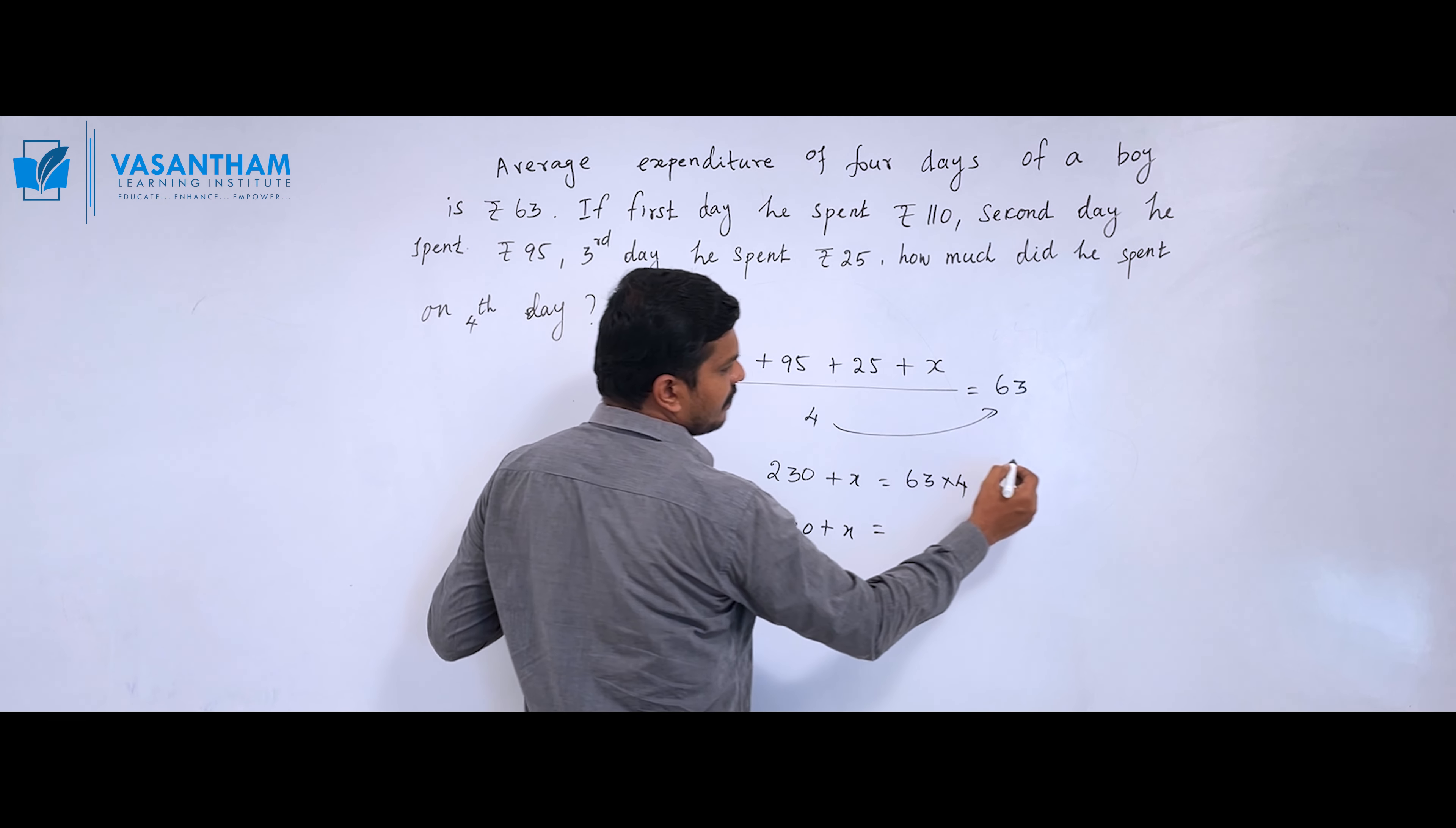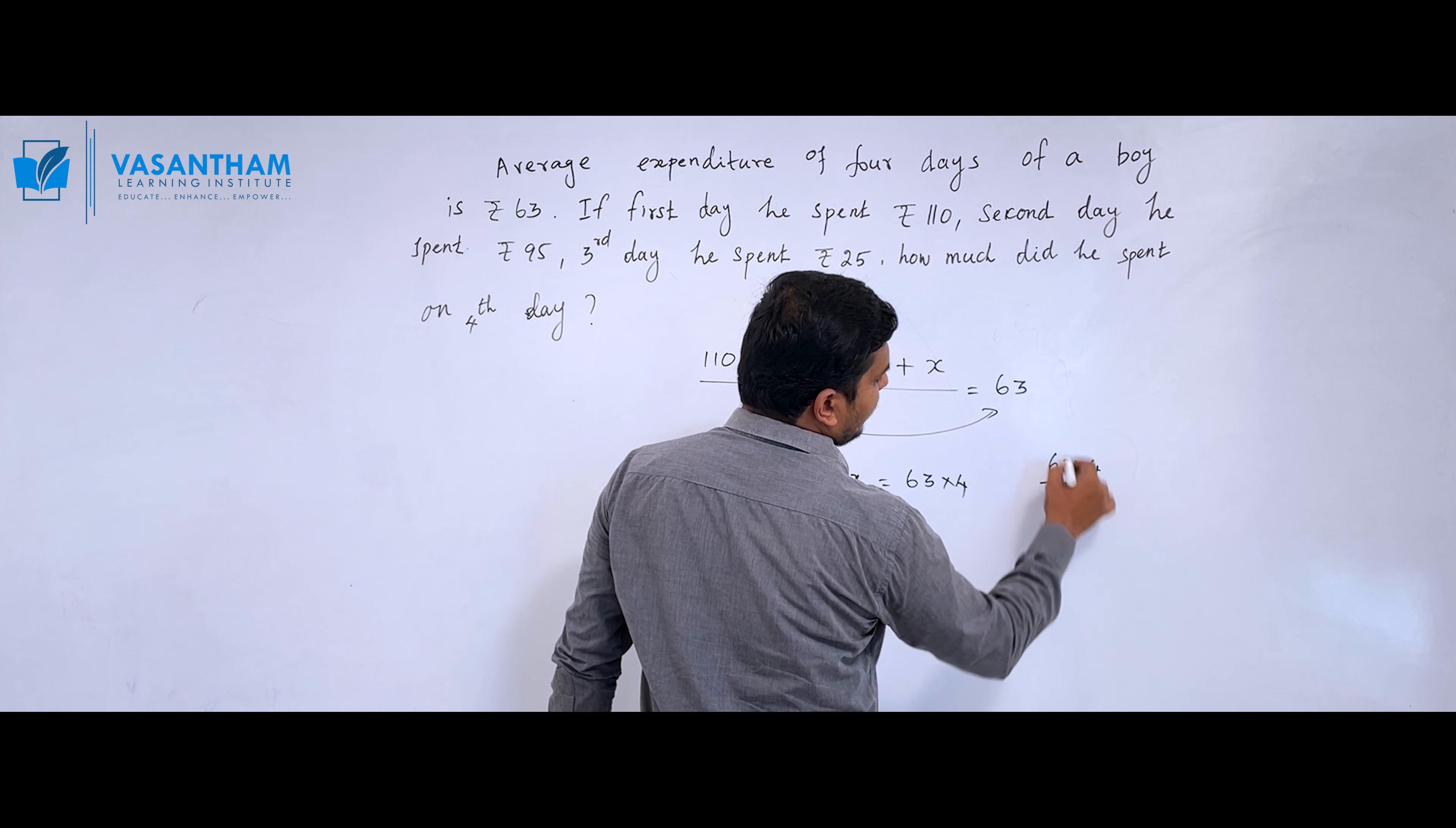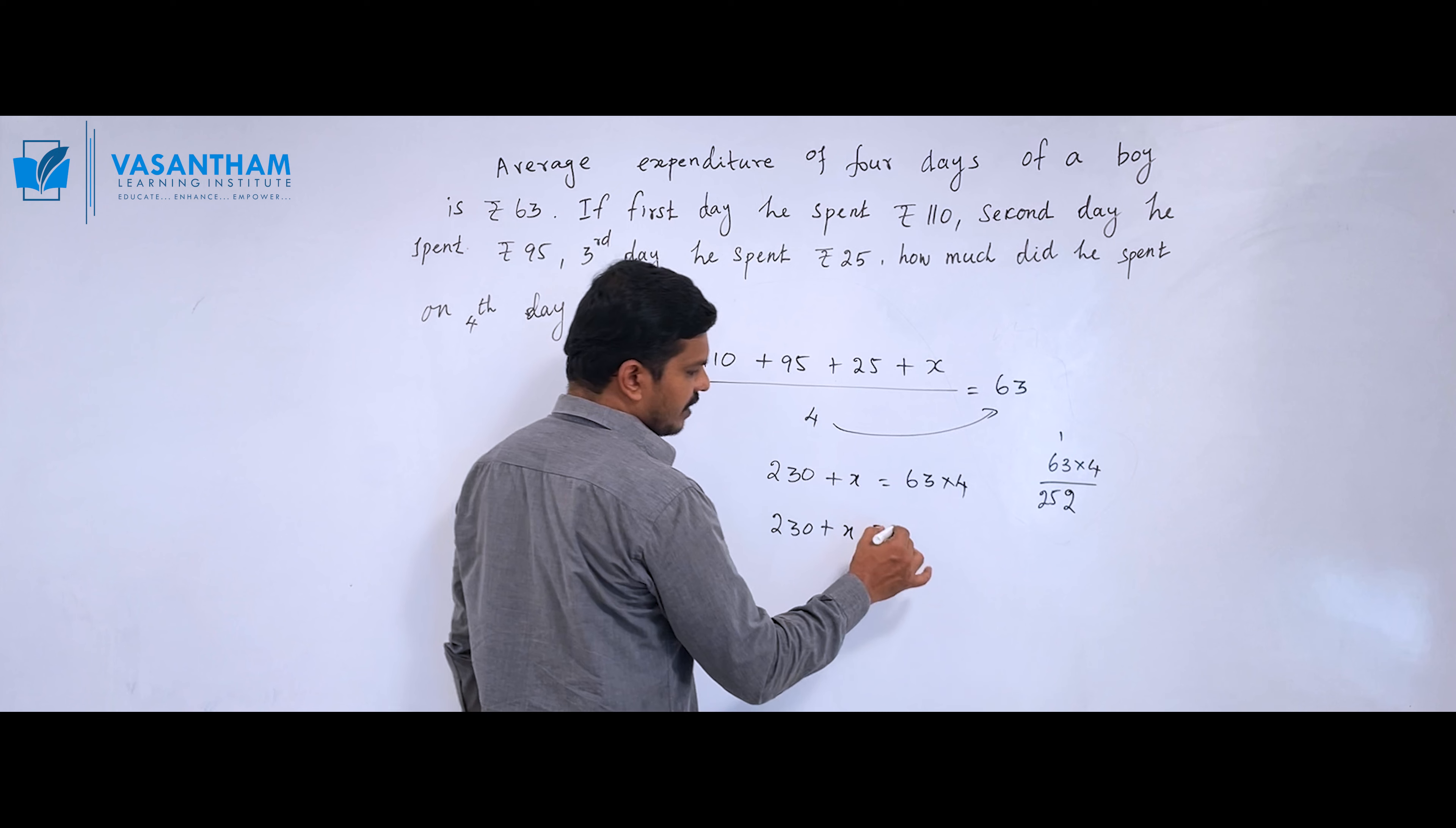Calculating 63 × 4: Three fours are 12, carry one. Six fours are 24, plus 1 is 25. So 63 × 4 = 252.